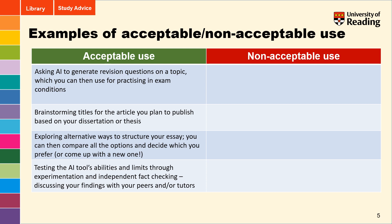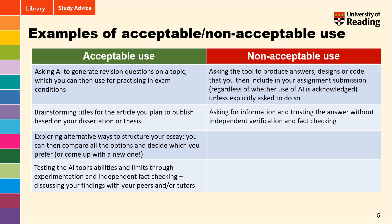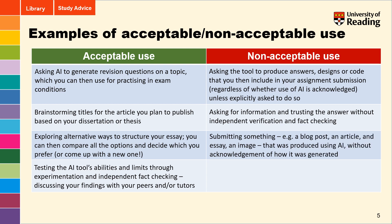Conversely, it's worth looking at what would be considered non-acceptable use of generative AI tools. Some examples of this may be: asking the tool to produce answers, designs, or code that you'd then include in your assignment submission — regardless of whether the use of AI is acknowledged — unless explicitly asked to do so; asking for information and trusting the answer without independent verification and fact-checking; or submitting something such as a blog post, article, essay, or image that was produced using AI without acknowledgement of how it was generated.